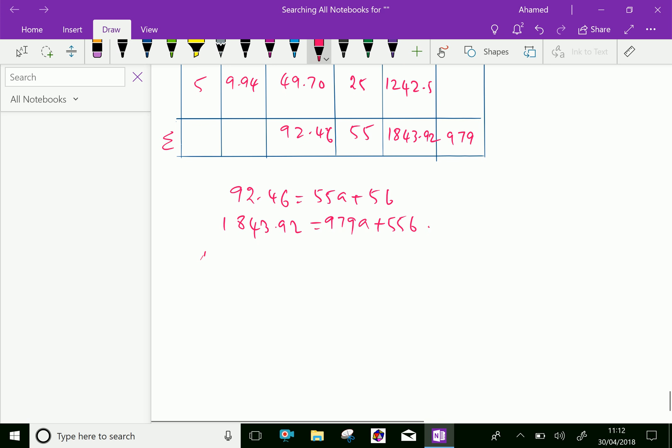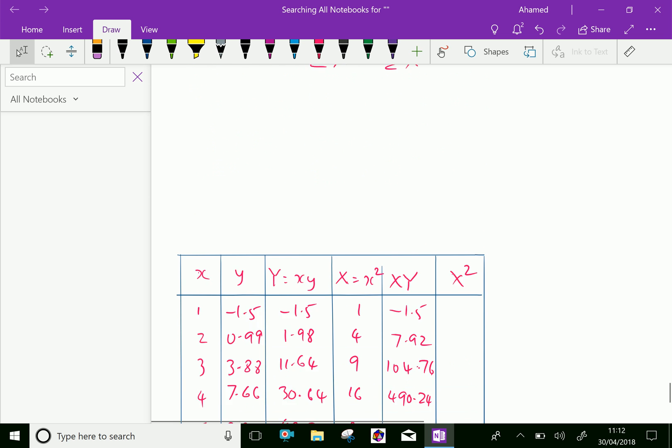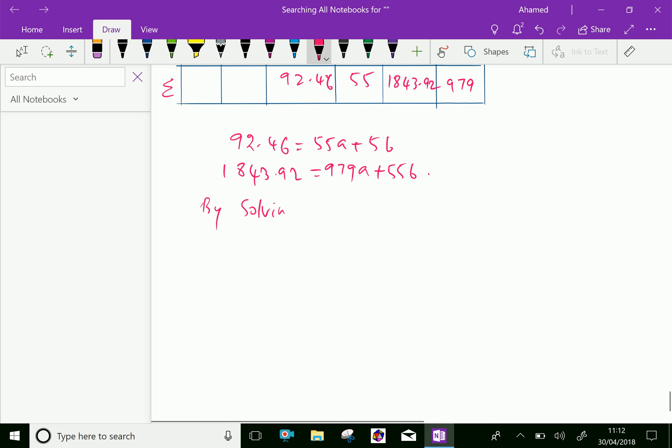By solving this system of equations, we get a equals 2.211 and b equals minus 5.829.